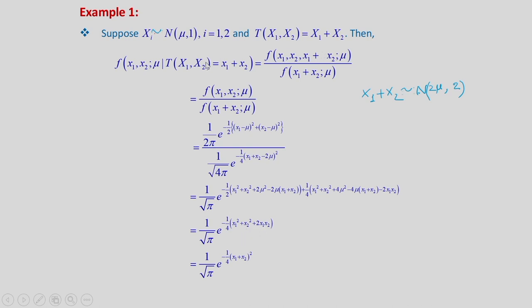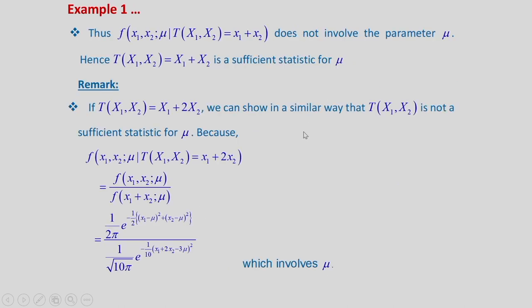This conditional PDF does not involve mu. Therefore, the statistic T(X1, X2) = X1 + X2 is a sufficient statistic for mu.